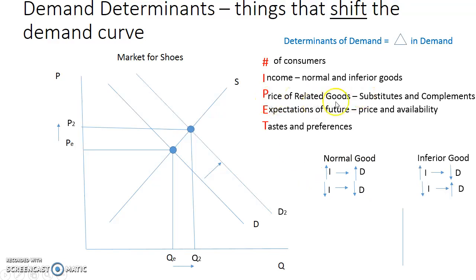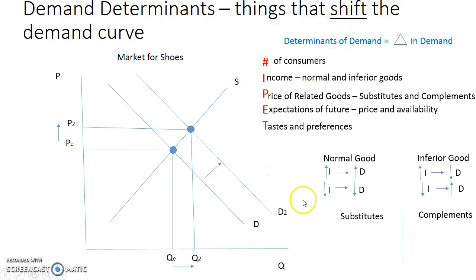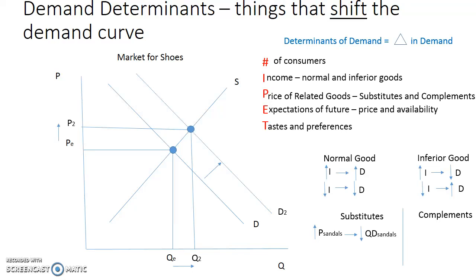Something that gets asked a lot is about price of related goods — substitutes versus complements. With substitutes, these are things I can substitute one for the other. When we talk about something that shifts the demand curve, the price hasn't changed for that good, but rather the price has changed for the substitute. Looking at sandals versus shoes: if the price of sandals goes up, the law of demand tells us the quantity demanded for sandals goes down — a movement along the sandals graph. However, the shoe price hasn't changed, but because they're substitutes, people will buy less sandals and increase their demand for shoes.